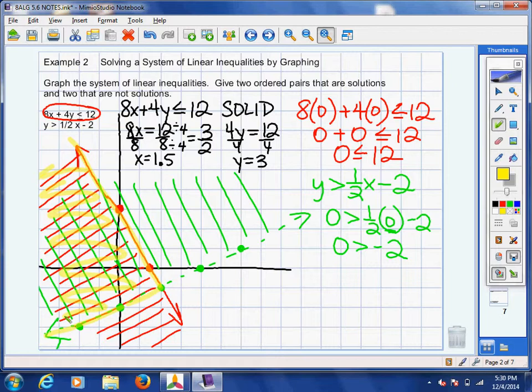And then they asked us, give two ordered pairs that are solutions. Well, just go to that crosshatch area and pick some points out. So definitely zero zero, that's a solution. That I'll mark right here. That's going to be negative one one. Anywhere where that crosshatch area of green and red lines and where I highlighted, I kind of overkilled it with the highlighter.